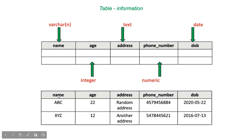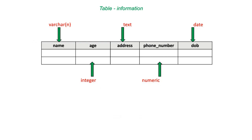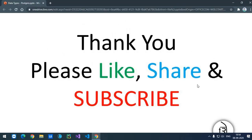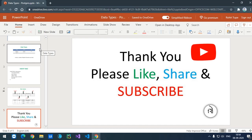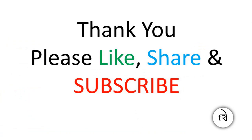In the table below you can see the name of the person, age, address where they live, phone number, and date of birth. This is how the information is going to be stored with the help of these data types. Thank you so much for watching. In the next video we will learn how to create a table inside our database.